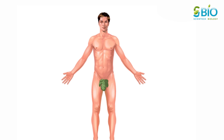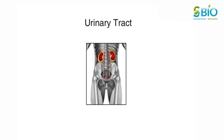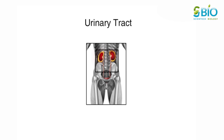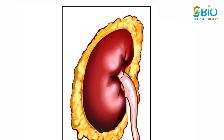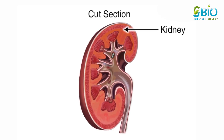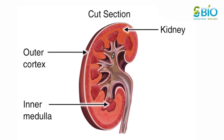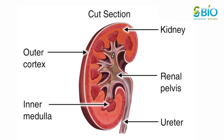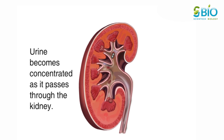Before we talk about how kidney stones are formed, take a moment to become familiar with the urinary tract. The urinary tract includes the kidneys, ureters, bladder, and urethra. Here is a cross section of the kidney. Urine flows from the outer cortex to the inner medulla. The renal pelvis is the funnel through which the urine exits the kidney and enters the ureter.